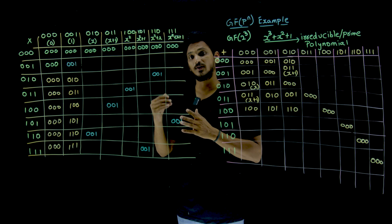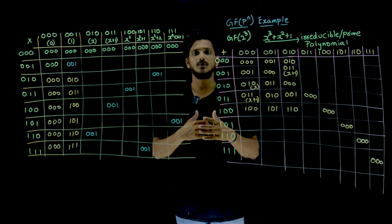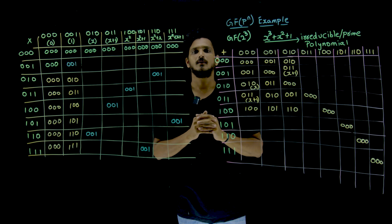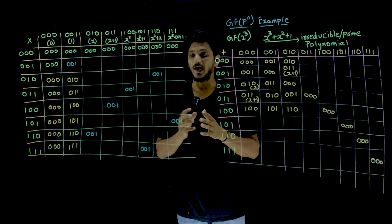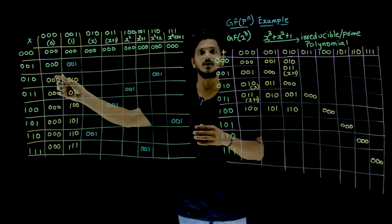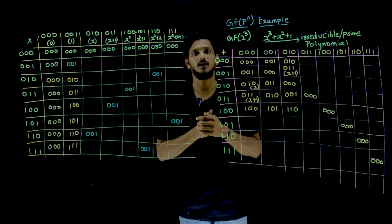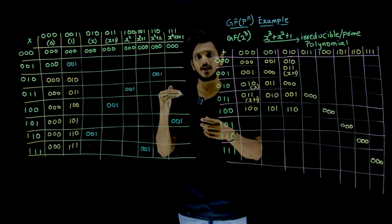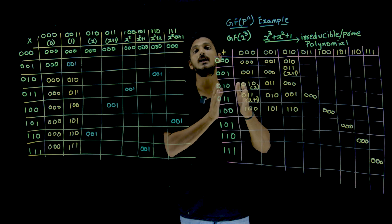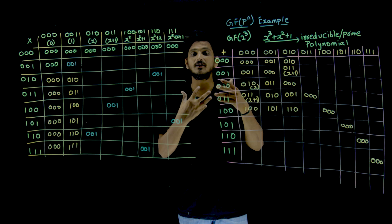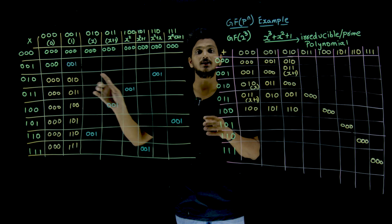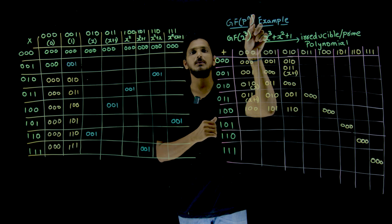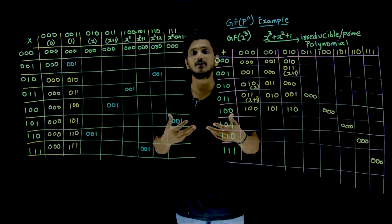Inverse element exists for all elements except 000 — this is accepted, and is what we discussed in the definition of the field. In this way, GF of p power n is working as a field. In our next class, we will look at identifying the inverse element for the multiplication operation, which we are going to use in cryptography. During encryption if you use element x, x inverse is used during the decryption phase. So identifying the inverse element for a given element in GF of 2 cube using the Euclidean algorithm is very important, and we will cover that in the next class.